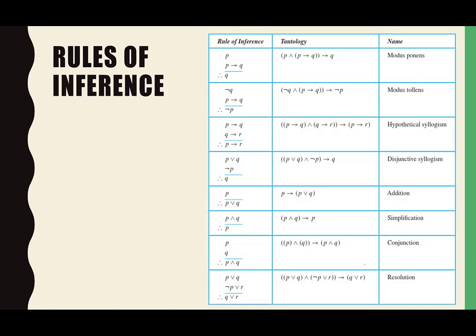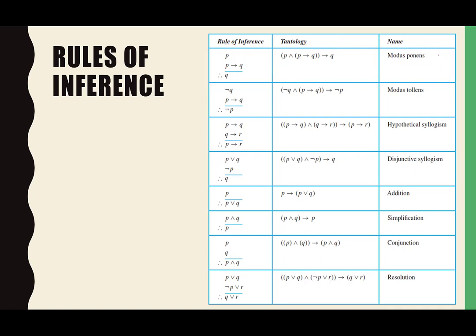This is right out of your book — rules of inference. We just talked about modus ponens right here, and we saw the tautology that goes with it. Do we agree with that? Do we understand it?